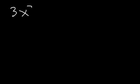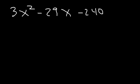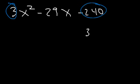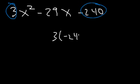Now let's try a harder example: 3x squared minus 29x minus 240. We multiply 3 and negative 240. 3 times 24 is 72, so 3 times negative 240 is negative 720. We need to find two numbers that multiply to negative 720 but add to negative 29.